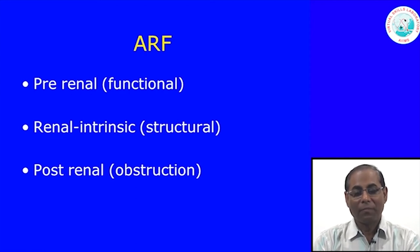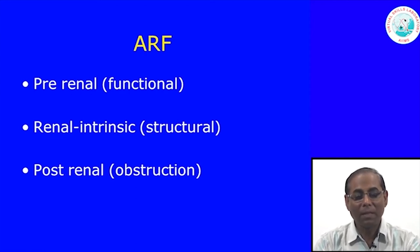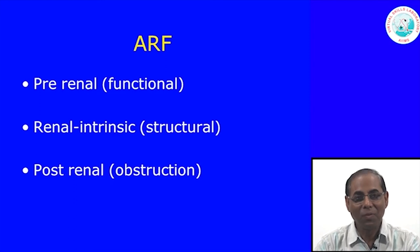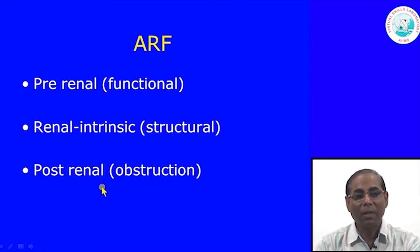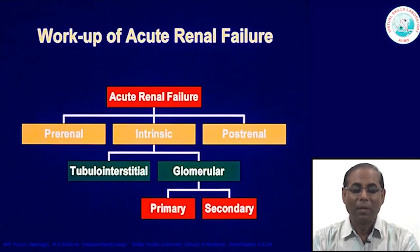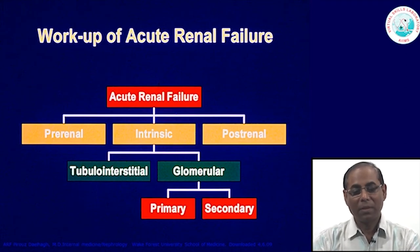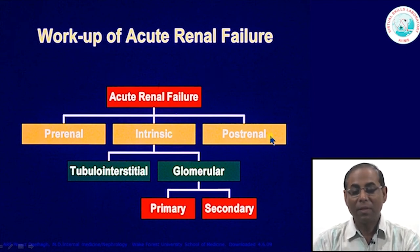The causes of acute renal failure are classically classified under three headings. Pre-renal: if blood supply to the kidney is very low, filtration volume will be low, causing renal failure. Intrinsic renal causes are the structural causes we will focus on. Post-renal causes involve obstruction in the ureter or lower renal tract. When working up a case, we determine whether it is pre-renal, intrinsic renal, or post-renal.